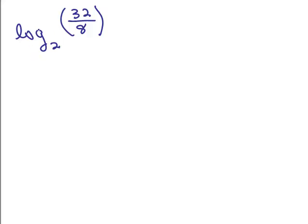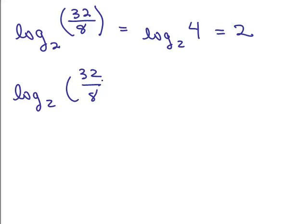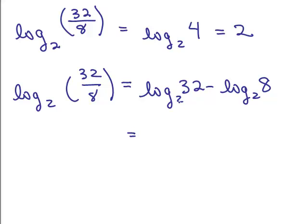Let's say you were asked to compute the log base 2 of 32 over 8. Simplifying inside parentheses, 32 divided by 8 is 4, so it's the log of 4 base 2. 2 to what power equals 4? That would be 2. Now using the quotient property: log base 2 of 32 minus log base 2 of 8. 2 to the what equals 32? That's 5. And 2 to what power equals 8? That's 3. So 5 minus 3 is 2 — you get the same answer.